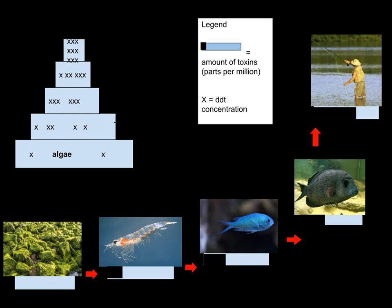Although sometimes used interchangeably with bioaccumulation, an important distinction is drawn between the two, and with bioconcentration. Bioaccumulation occurs within a trophic level, and is the increase in the concentration of a substance in certain tissues of organisms' bodies due to absorption from food and the environment. Bioconcentration is defined as occurring when uptake from the water is greater than excretion. Thus, bioconcentration and bioaccumulation occur within an organism, and biomagnification occurs across trophic levels.